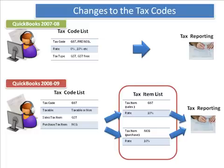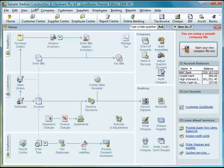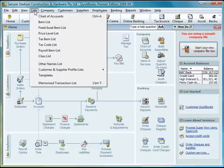I'll show you a quick demonstration to show you how they work now. As you'll notice, there are now two options in the list menu: the first being the new tax item list, and the second being the tax code list itself.